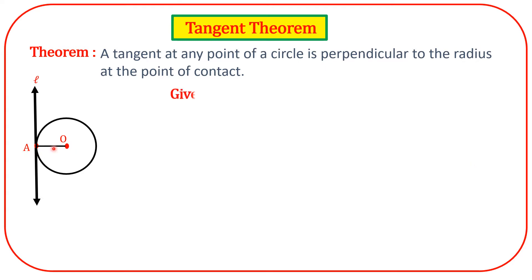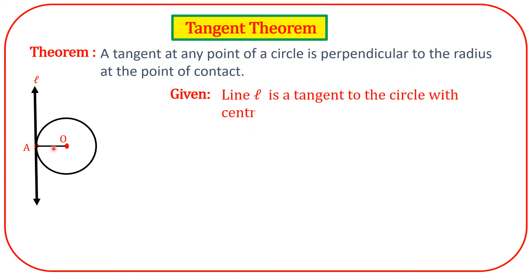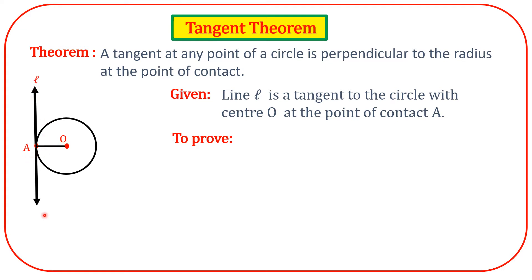Write down the given part. What is the given part? Line L is a tangent to the circle with center O at the point of contact A. To prove: OA is perpendicular to line L. OA is the radius, and line L is perpendicular to the radius OA.